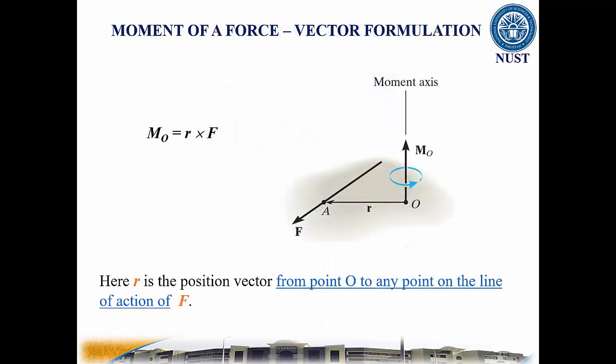Moments in 3D can be calculated using scalar approach, but it can be difficult and time consuming. Thus, it is often easier to use mathematical approach called the vector cross product. Using the vector cross product, M_O equals R cross F. Here, R is the position vector from point O to any point on the line of action of force. We have already covered how to measure the position of a point in previous videos.